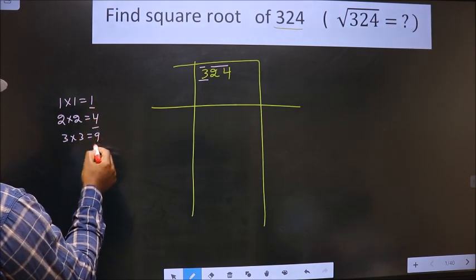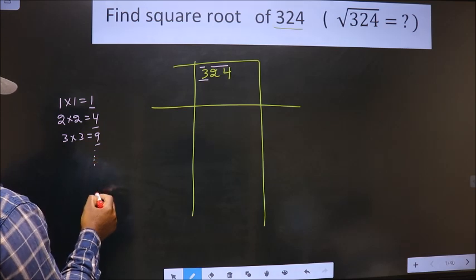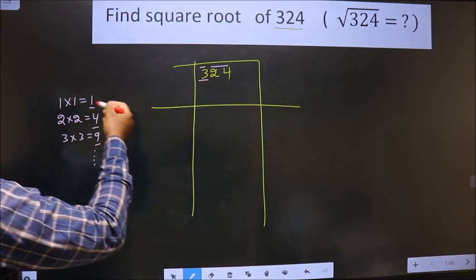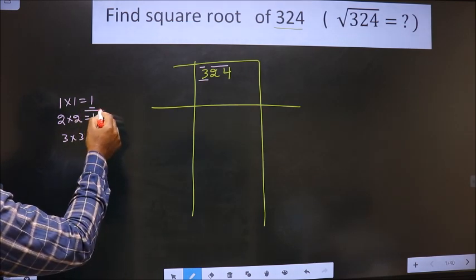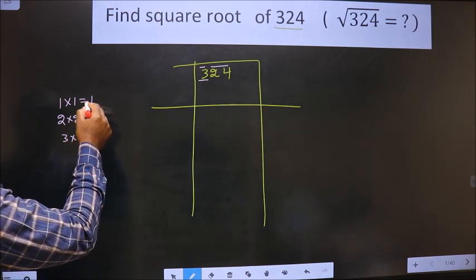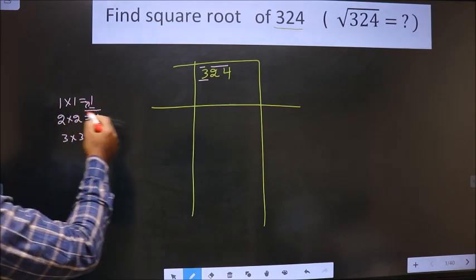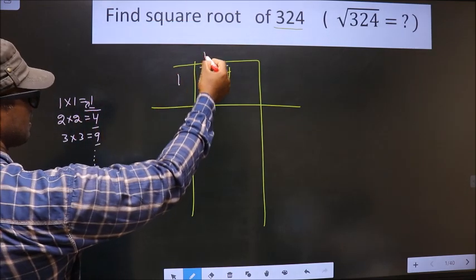These are square numbers and it goes on. Now we should see 3 lies between which two square numbers. 3 lies here. So we take the smaller one, that is 1. So 1, 1 is 1.